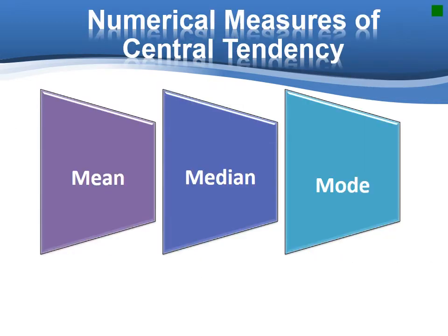Now that we've examined some graphical techniques for summarizing and describing quantitative datasets, mean, median, and mode are three numerical measures of central tendency.